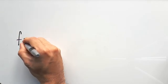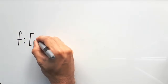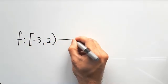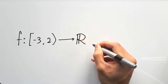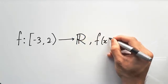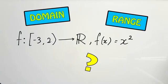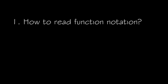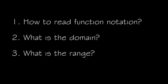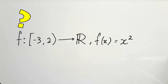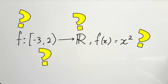G'day guys and welcome back to another video on functions. Today we're going to be looking at f colon square bracket negative 3 comma 2 round bracket arrow to the right with a funny looking capital R comma f of x equals x squared. What does this mean and what is the domain and range of this particular function? So we're going to learn about function notation and how to find the domain and range of this stuff and what all the stuff here basically means today on MathBase.